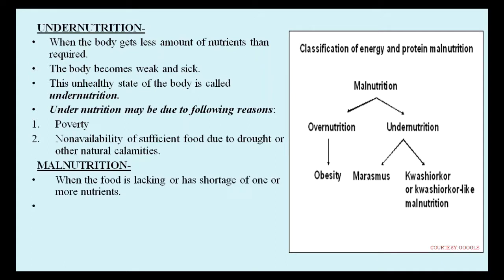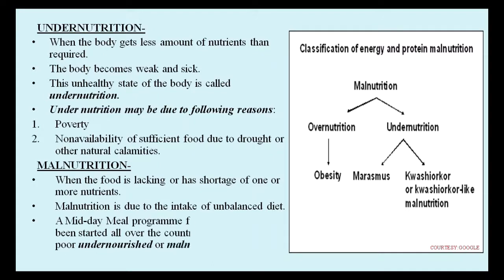Malnutrition. When the food is lacking or has shortage of one or more nutrients, it is called malnutrition. Malnutrition is caused due to overnutrition and undernutrition. Overnutrition causes obesity and undernutrition causes marasmus and kwashiorkor. A midday meal program for school children has been started all over the country to provide diet to poor, undernourished or malnourished children.